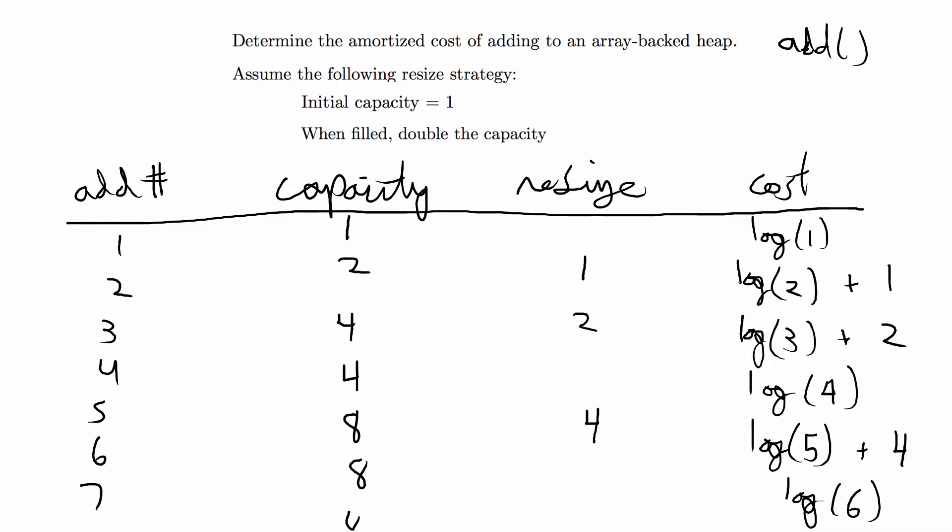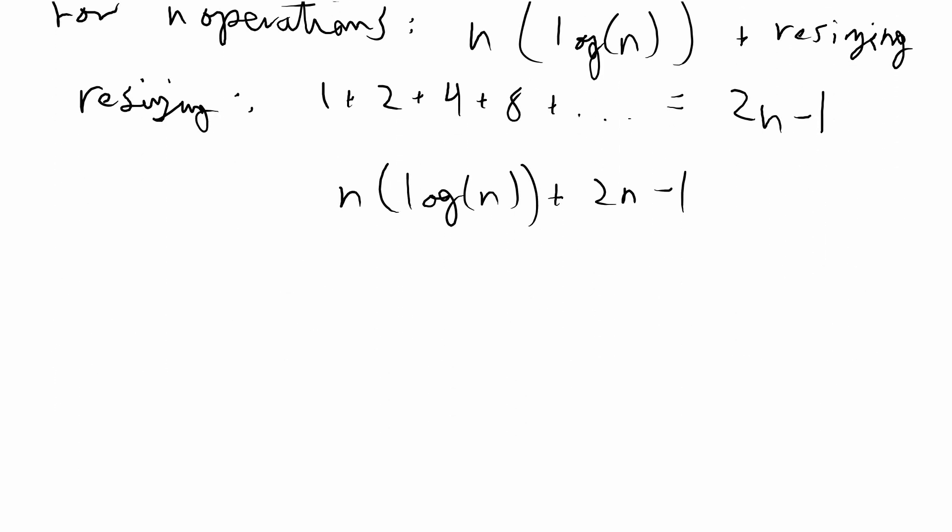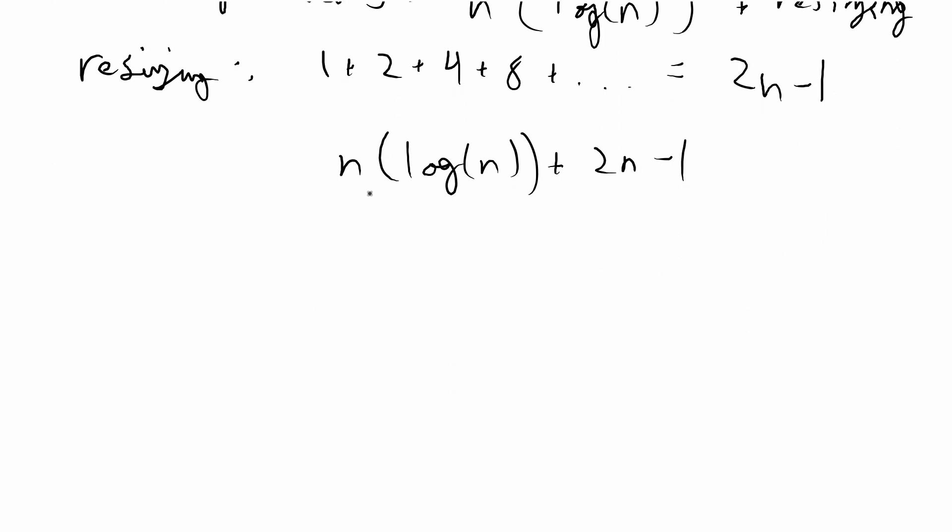When it's asking for the total or overall amortized cost you want to give that in big O notation. So if you take the big O notation of this it's going to be O(n log n) because O(n log n) is bigger than O(n) and you have an addition here. So this would be basically O(n log n) plus O(n) and so the final answer for the total amortized cost is O(n log n).